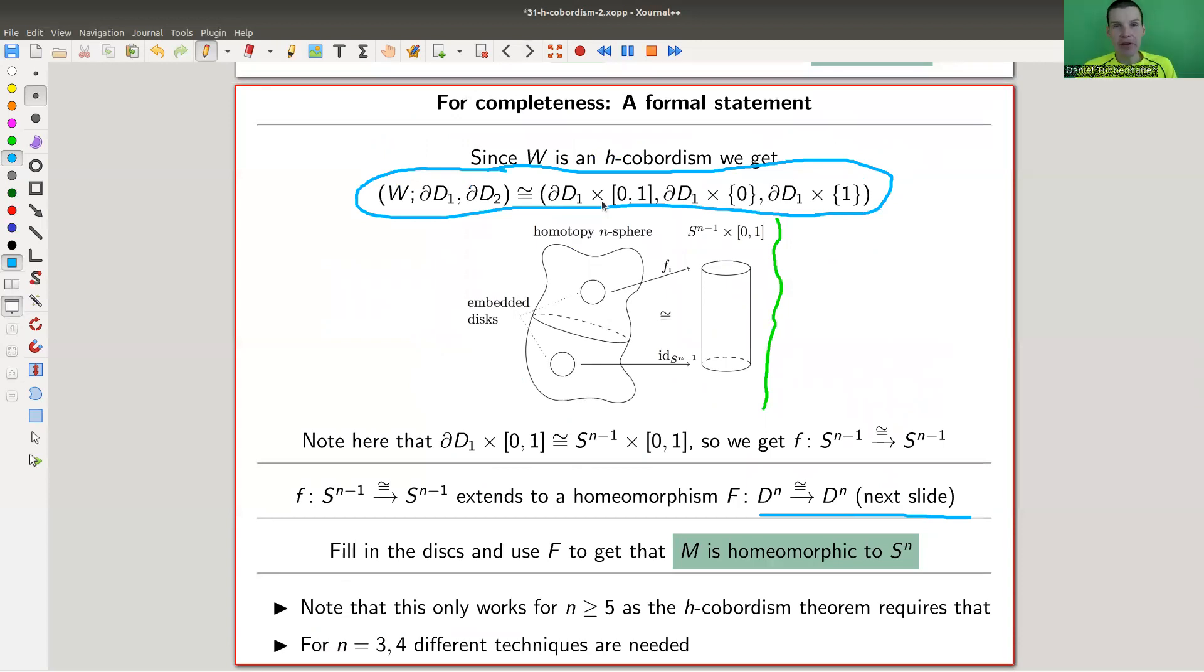And this only works for n greater than or equal to five because the H-cobordism theorem requires that. The rest goes actually through for all dimensions, but it's just not helpful because you don't have the H-cobordism theorem which does all the work for you. Essentially it says that your W here is a cylinder and then you're done.